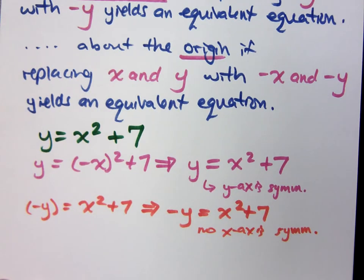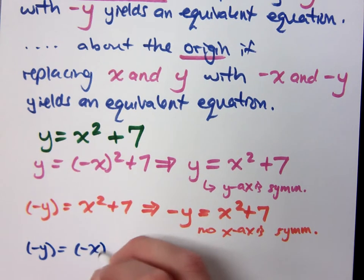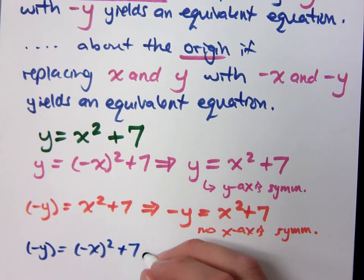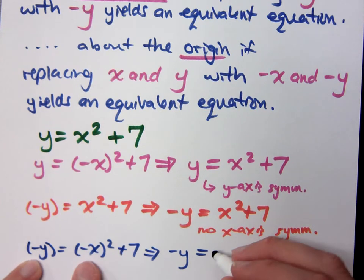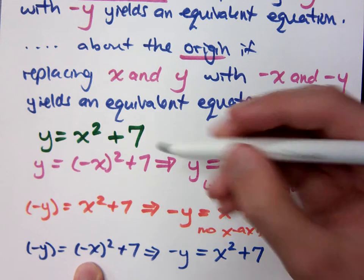What if I replace the y with negative y and the x with negative x? Is it the same as my original? What does this give me? Negative y equals